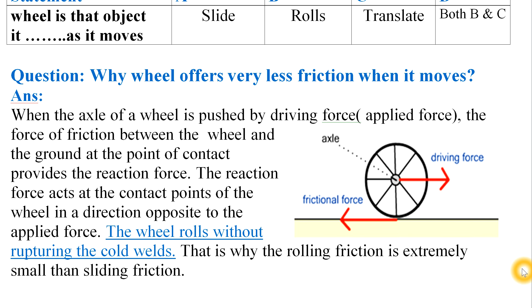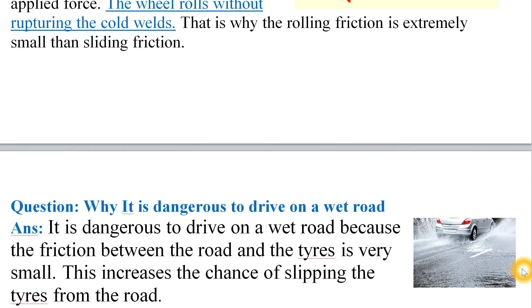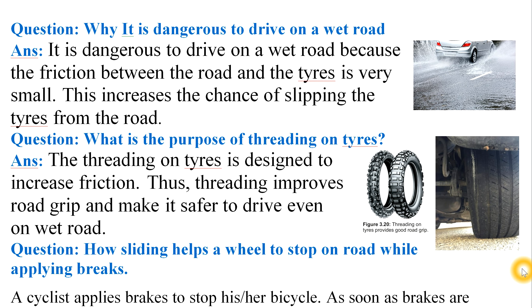Write this in your notebook and maintain it. The next question — you can see the diagram — is: why is it dangerous to drive on a wet road? It is dangerous because the friction between the road and the tire is very small, as a wet surface acts like a lubricant. This lubricant reduces friction and interlocking and cold welds between the two surfaces, increasing the chance of the tires slipping from the road.